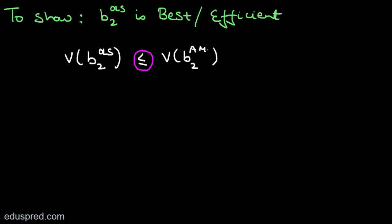I'm going to divide this proof into two lectures. In this lecture, I'm going to find the formula to calculate the variance of B2 OLS. In the next lecture, I will show how the variance of B2 OLS is less than the variance of any other linear unbiased estimator. I'm working with B2 OLS only, so I won't write OLS repeatedly.